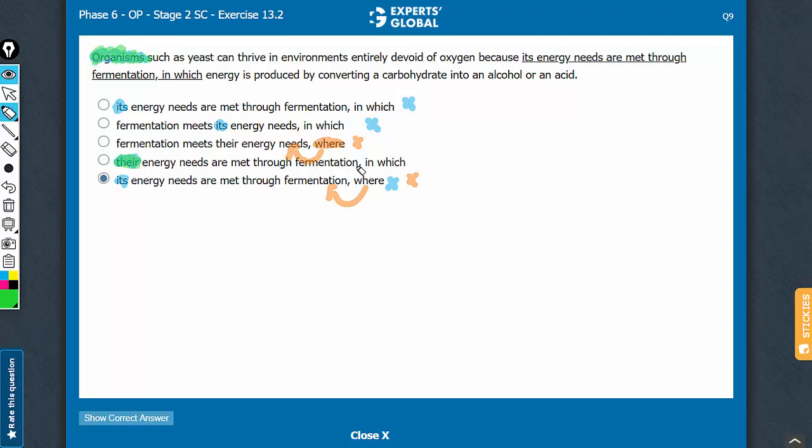are met through fermentation and then fermentation in which this preposition in here avoids the modifier errors seen in choices C and E. So fermentation in which energy is produced by converting a carbohydrate into an alcohol or an acid. Makes sense. D is the correct answer choice.